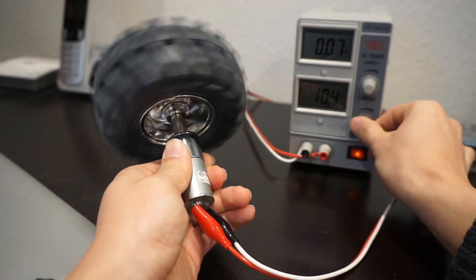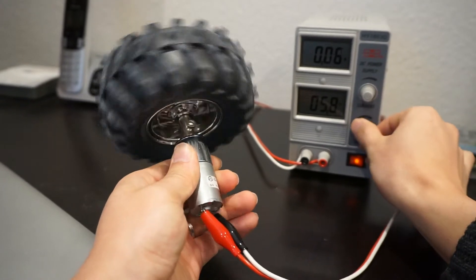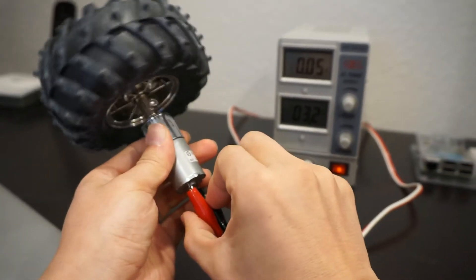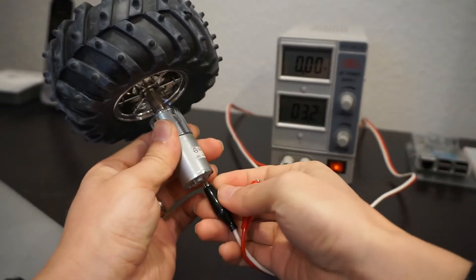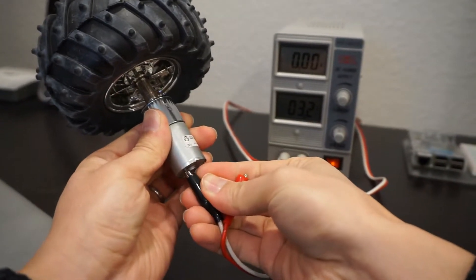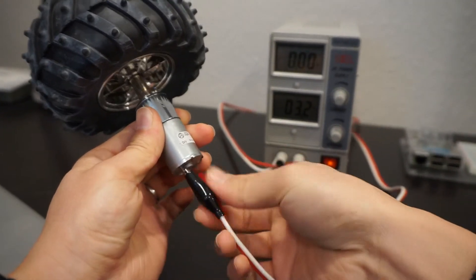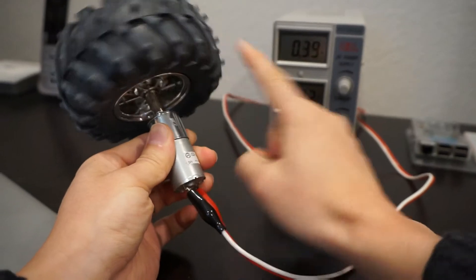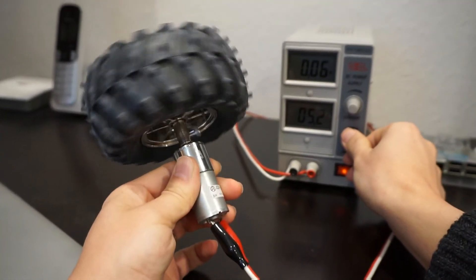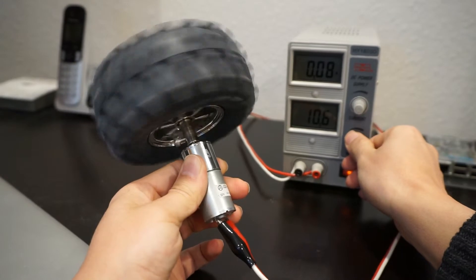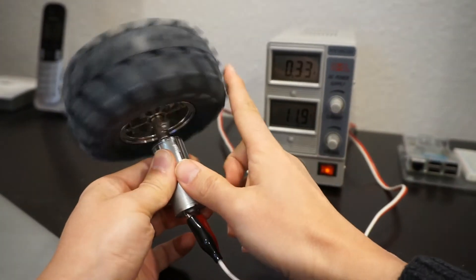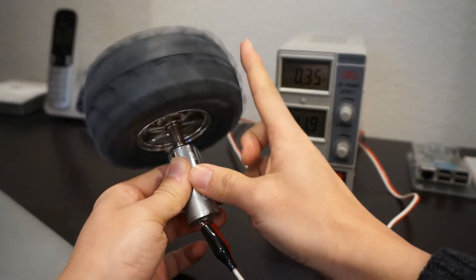Another thing you need to know is if you want to reverse the rotation, simply swap the input. Now it rotates backward. With a regular DC motor, you can easily change direction by simply changing the input.